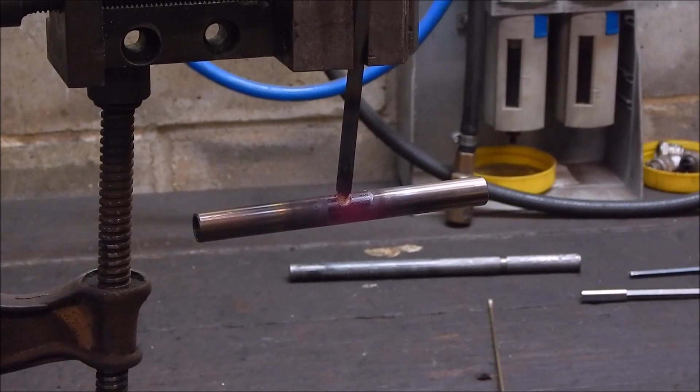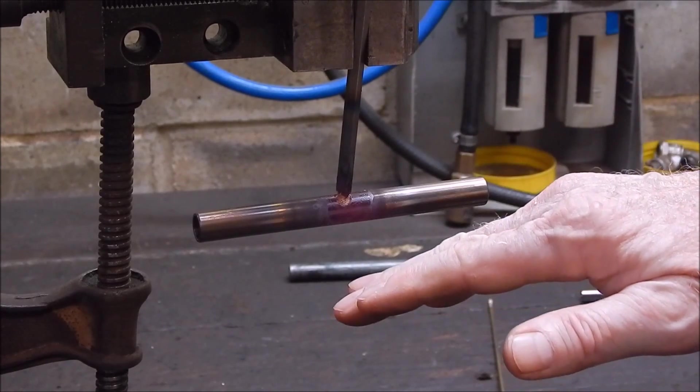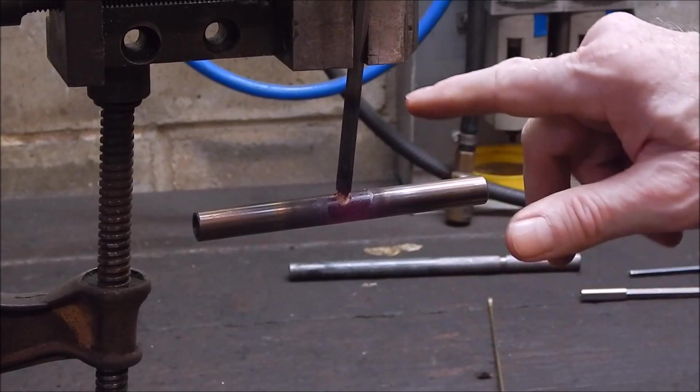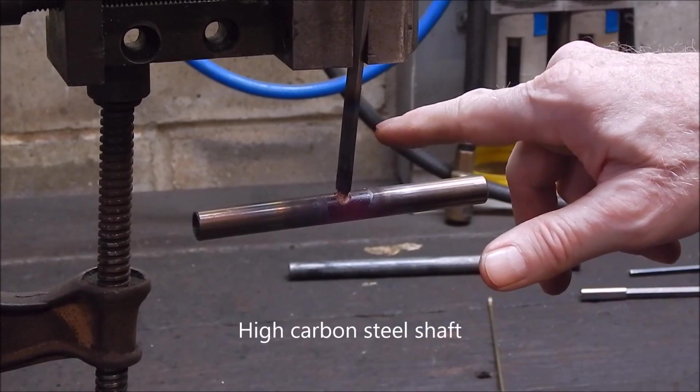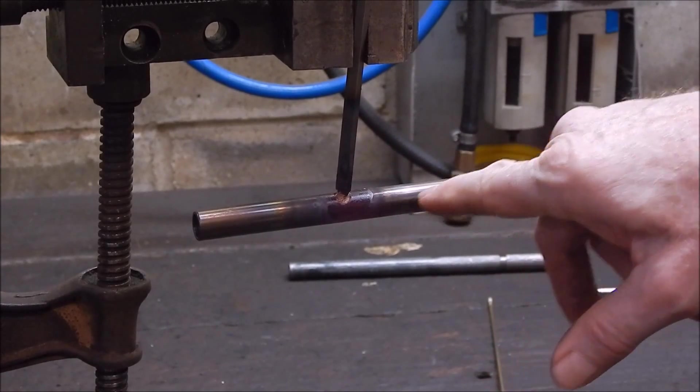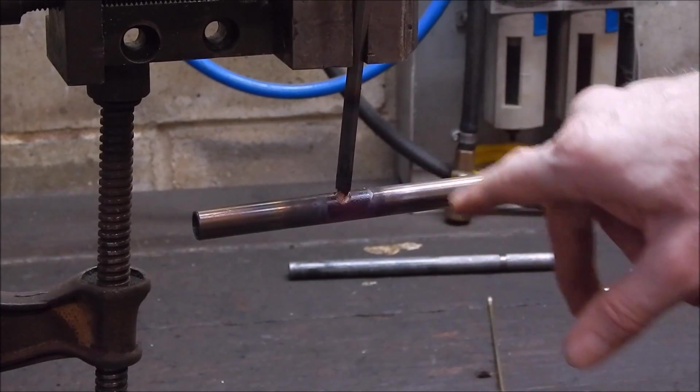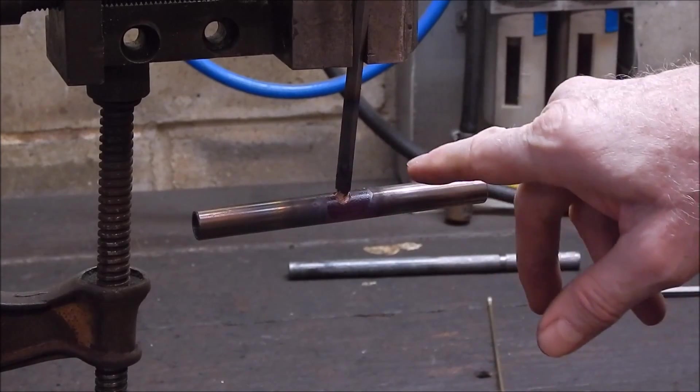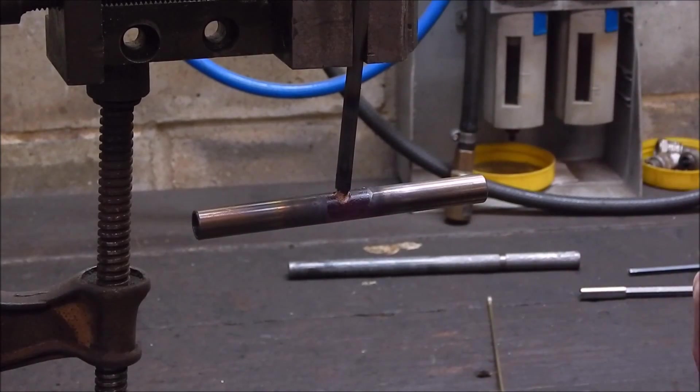Now, it's just going to cool it down. Air cool it. Do not quench it in this case because we're using hardened steel here. Okay, and yeah, once it's cooled down, we'll just clean it up on a wire wheel and it should be good to go.